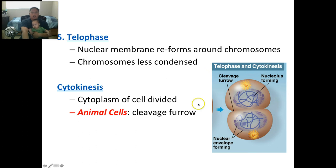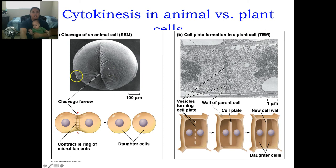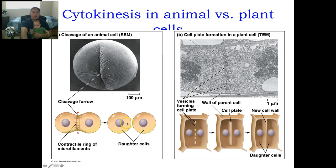Animal cells have a cleavage furrow. Plant cells, since they have a cell wall, are a little different. In an animal cell, you see how it cleaves in — it kind of folds and breaks apart. But in a plant cell, in the middle of the two cells a cell plate forms, then it becomes one complete plate, connects, and now you have a new cell wall and two daughter cells. Plant cells tend to be pressed against each other, so they just make a new wall between two neighbors.